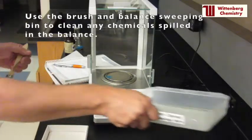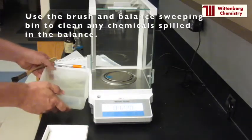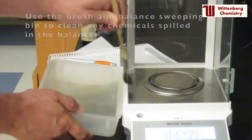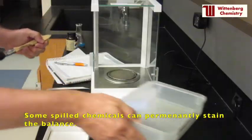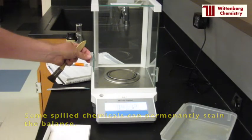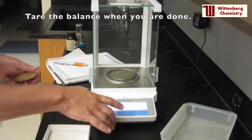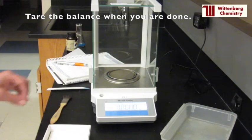If you spilled any solid on the balance, use the brush to sweep it into the sweeping bin. Some reagents can permanently stain the balance. Slide the door closed and tare the balance when you are done.